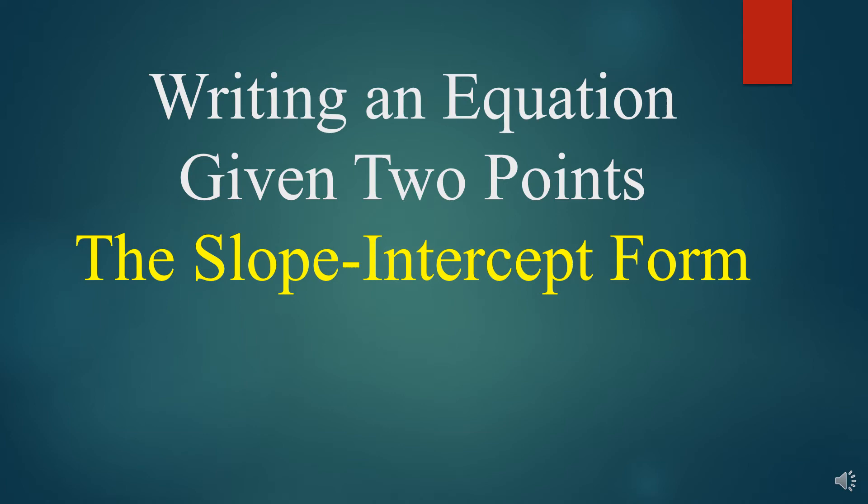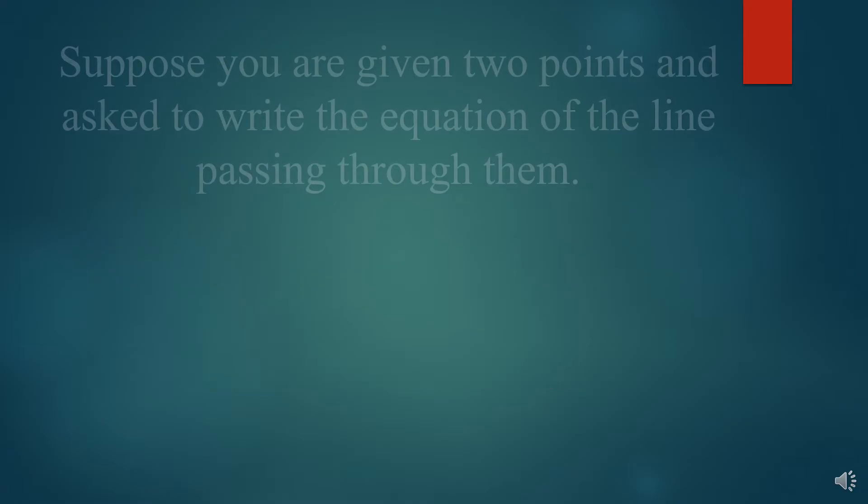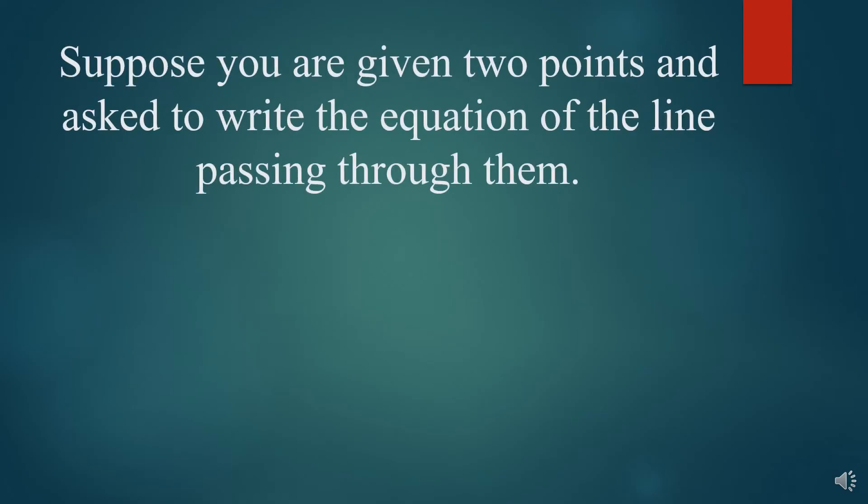Hello, and welcome back to Sheaf Math. Today's video lesson is going to be on writing an equation given two points using the slope-intercept form. Now, let's suppose that you're given two points, and you're asked to write the equation of the line that passes through them. So imagine these two points on a graph, and there's a line going through them, and you have to write that equation.